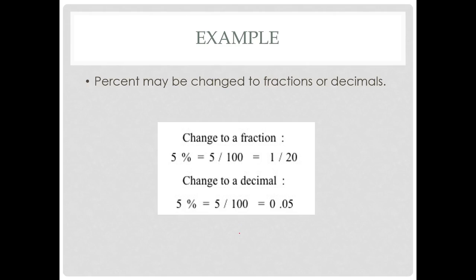Percent can be changed to those fractions that are decimals. So five percent, five over 100 is one over 20. So five divided by 100 to get the one over 20. Five goes into 120 times. We can change it to a decimal. Five percent is five over 100 is 0.05.